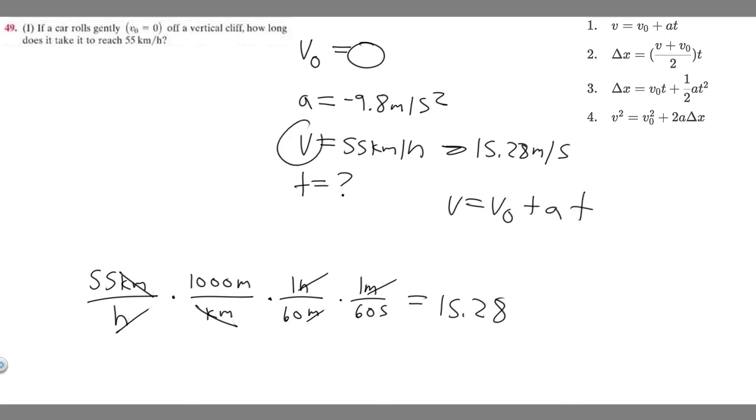So let's just plug in. We can just plug in because we have all the variables. So v is 15.28 equals v sub 0, which is 0. I'm not going to write it though. So plus a, which is minus 9.8 times t, which we're solving for. So we can just divide both sides by minus 9.8.